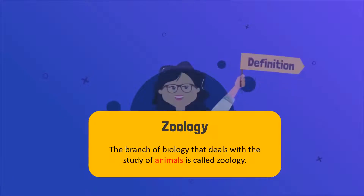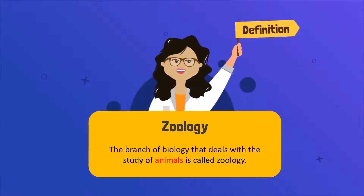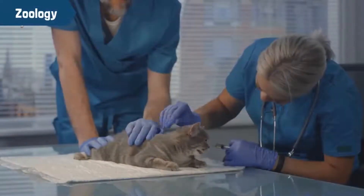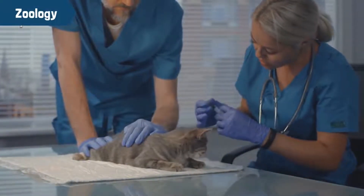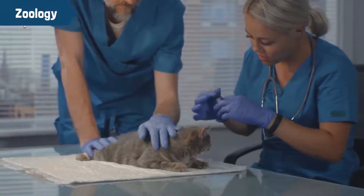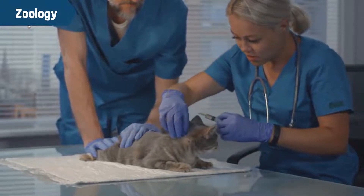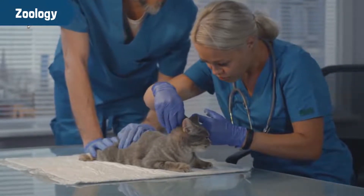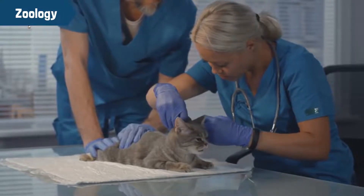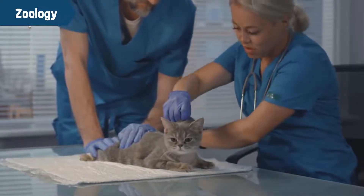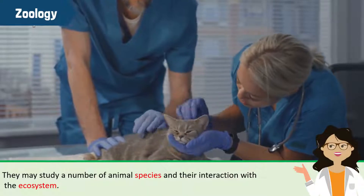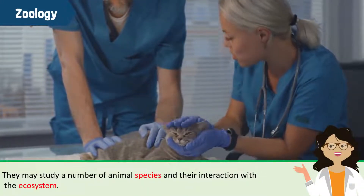The branch of biology that deals with the study of animals is called zoology. Veterinary doctors, or vets, and zoologists are professionals who engage in this field. While vets are only concerned with providing medical care to animals, the job of zoologists is much more detailed. They may study a number of animal species and their interaction with the ecosystem.